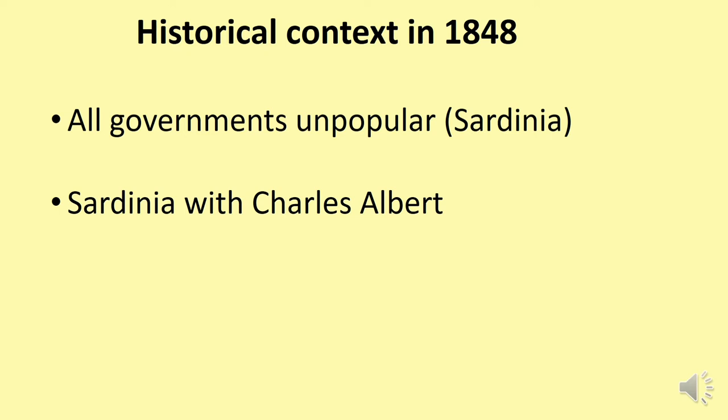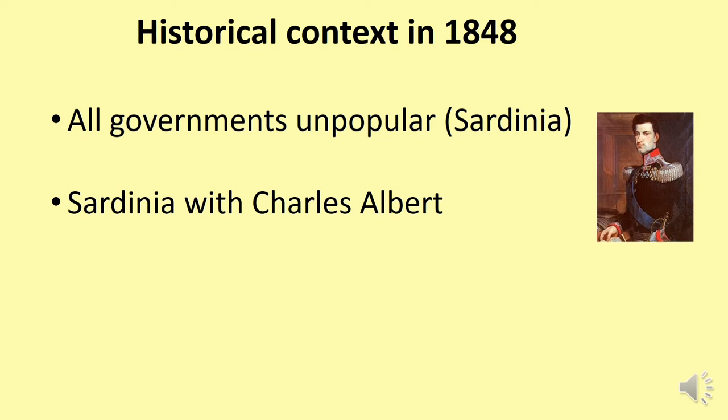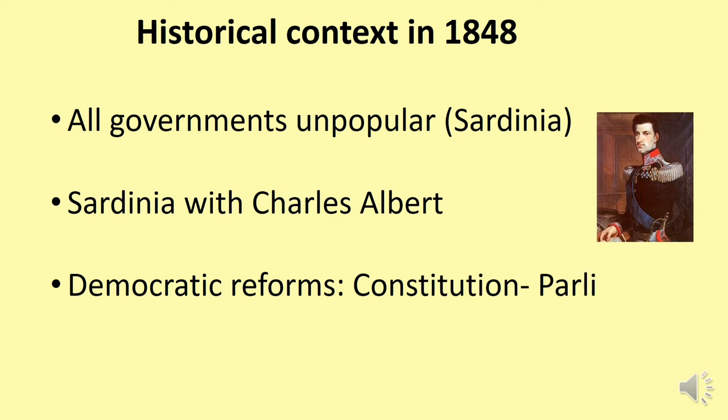Remember, Prussia took the lead through a series of reforms that paved the way for democracy. Well, Charles Albert did the same — he paved the way for democratic reforms. There was a constitution and a parliament, and in the constitution there was a Bill of Rights. So people who lived in Sardinia were happy because their rights were respected, while in the other kingdoms people did not have the same rights and the governments were utterly unpopular. That is why Sardinia took the lead, because democratic reforms were being implemented in that kingdom.